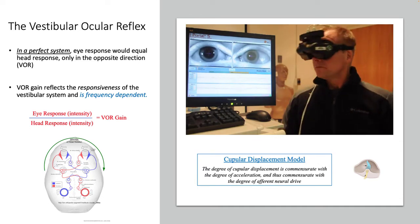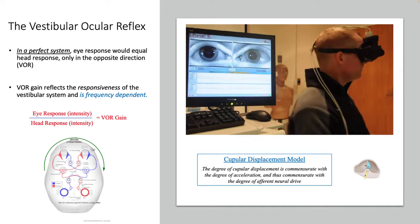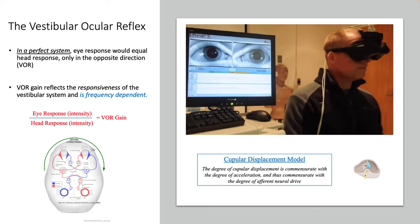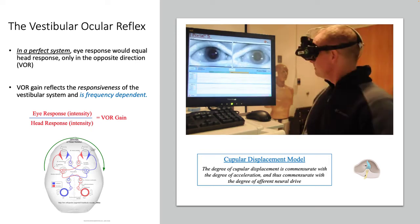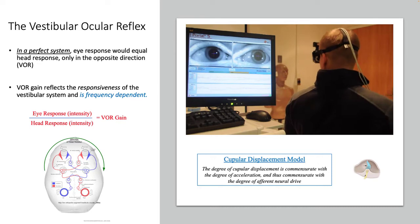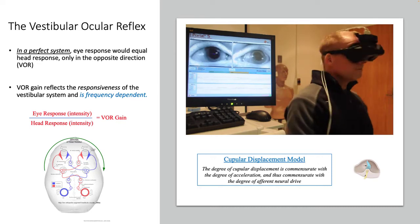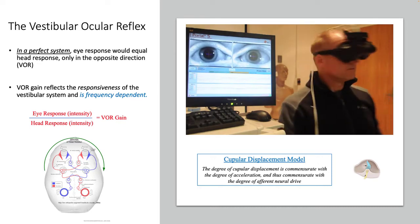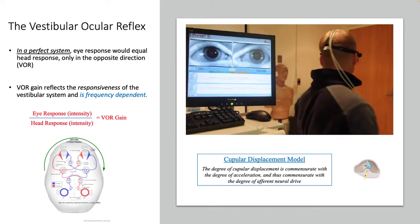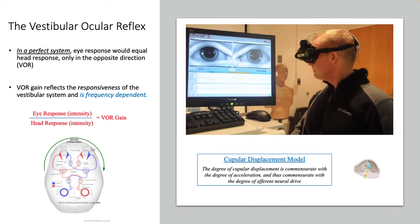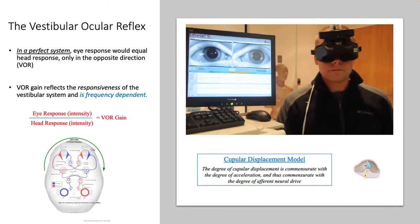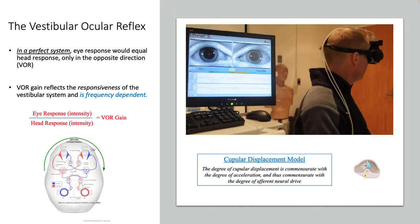The VOR is essentially commensurate with head rotation — the faster I go, the faster the nystagmus. This is all based on the cupular displacement model, such that as I move my head slowly, I get minimal displacement of the cupula, and thus minimal afferent drive to produce the VOR.